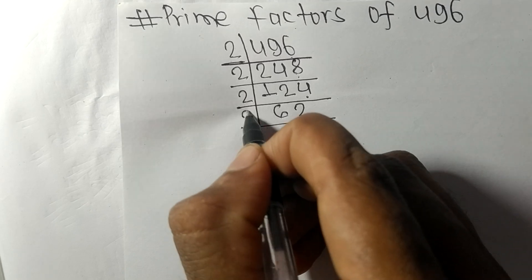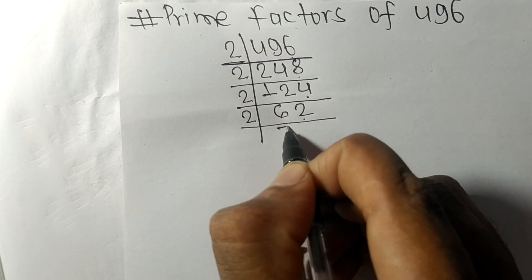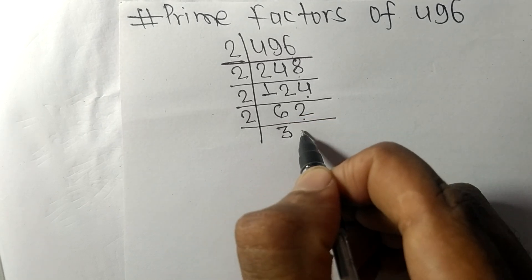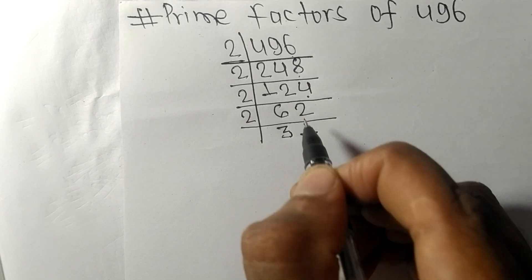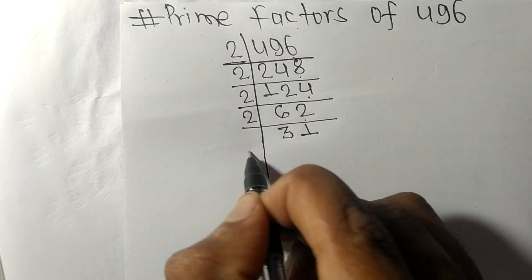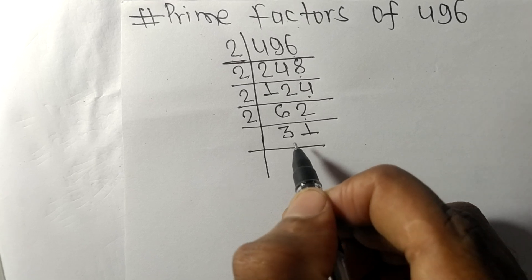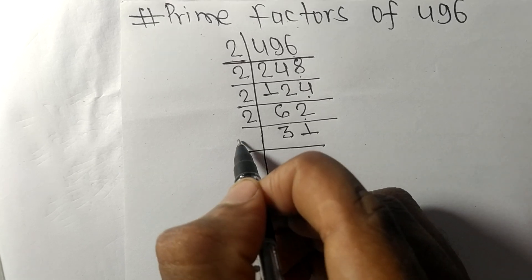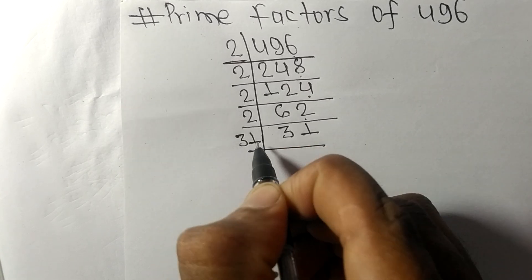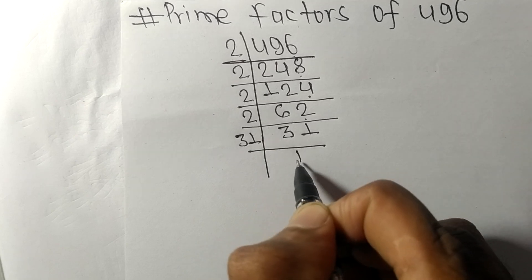Two times 3 is 6, two times 1 is 2. Now we got here 31, which is a prime number, so it is divisible by 31 itself and we get here 1.